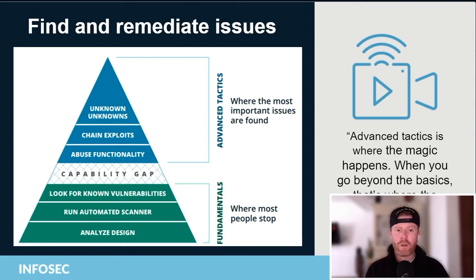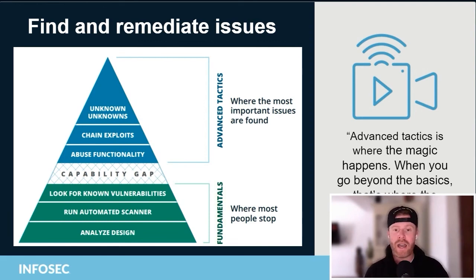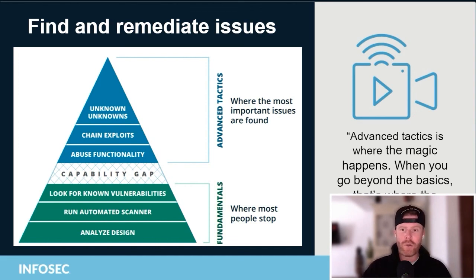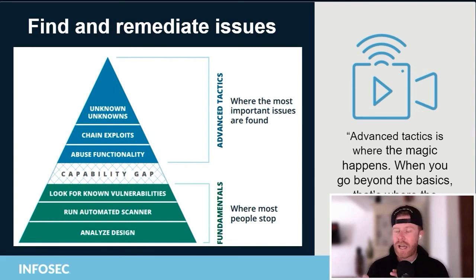The second issue is broken authorization. Authorization is when a system verifies whether or not you're allowed to do something, and it being broken means it does that incorrectly. In this case, it had to do with how you change credentials. Normally you supply the old password to verify you're allowed to change to a new one, but this system asked you to supply the user identifier instead.